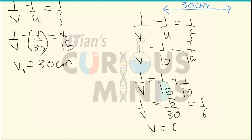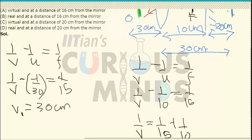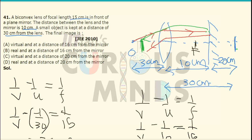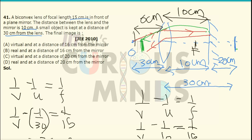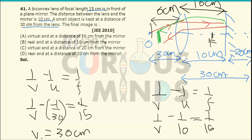Taking the left-hand side as positive, V = 6 cm means the final image is at a distance of 6 cm on the left-hand side of the lens. From the mirror, the total distance is 10 + 6 = 16 cm. Since it is formed on the real side (left-hand side), the image is a real image. The correct answer is option B: real image at a distance of 16 cm from the mirror.